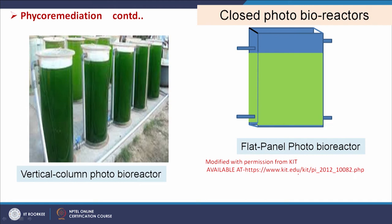A vertical column photobioreactor has vertical columns arranged in series — water enters the first column, exits into the second column, then into the third, fourth, and fifth columns sequentially, then exits as final treated water after harvesting. A flat panel photobioreactor looks like a flat panel with an inlet and outlet. These are all types of closed photobioreactors.